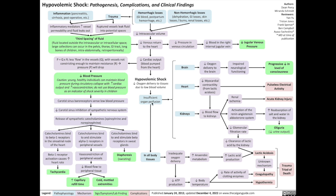What about the consequences of insufficient organ perfusion secondary to hypovolemic shock? In the brain, reduced oxygen delivery results in impaired neurological functioning, leading to progressive decreases in level of consciousness. In the heart, reduced oxygen results in reduced myocardial contractility, which can result in a type of cardiac arrest called pulseless electrical activity. Reduced myocardial contractility also results in reduced blood flow to the kidneys, causing death of renal tissue and leading to acute kidney injury. Reduced blood flow to the kidneys also activates the renin-angiotensin-aldosterone system, which increases the absorption of salt and water in the kidney, reducing urine output — otherwise known as oliguria. Reduced kidney blood flow also means the kidneys will filter less blood, reducing the glomerular filtration rate and further contributing to oliguria.